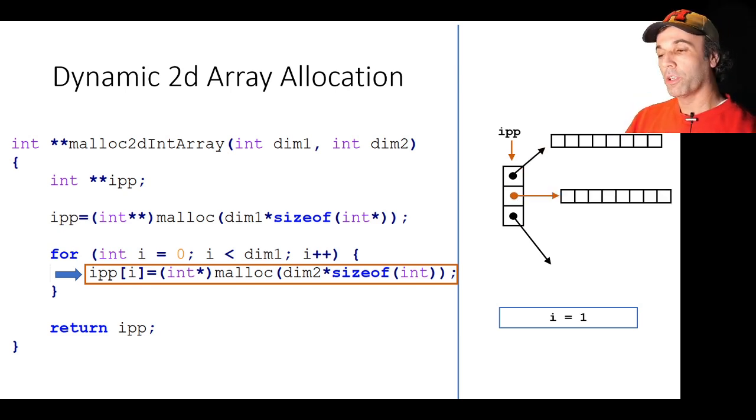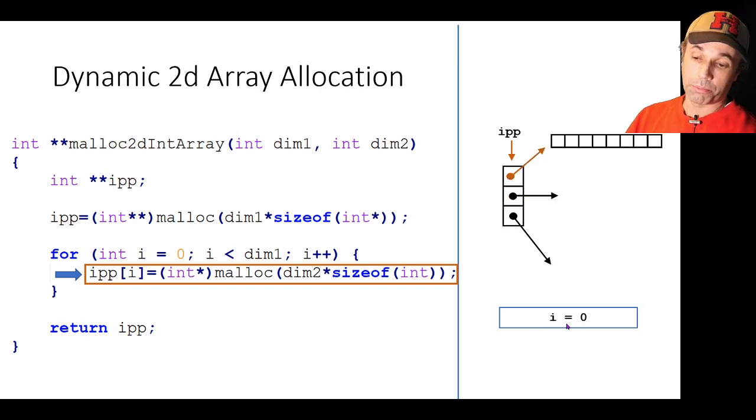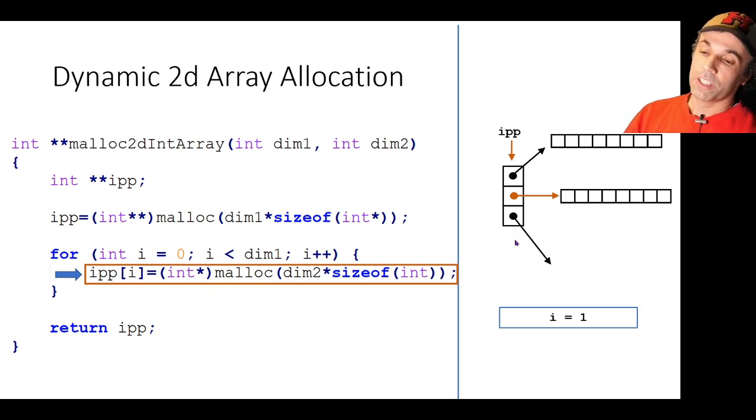So we go around the loop again. Now i is one. Remember on the previous slide i was zero and it was assigned to this portion of memory. Now i is one. We've made another call to malloc. We've got another eight elements for our array. We cast it to an int star pointer yet again but this time we assign the location of that memory to the first index of this array of pointers. So we've got two rows done at this point and we go around the loop again.